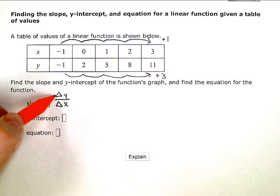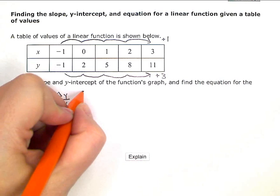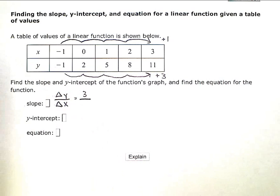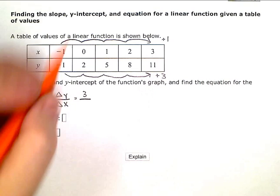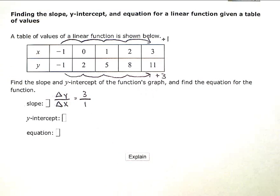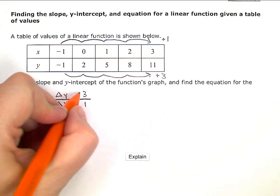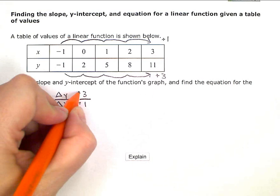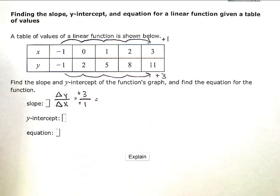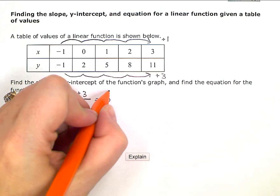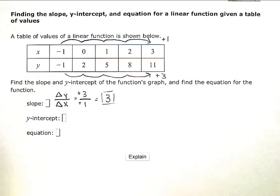So now we just need to put these in a fraction. So the change in y is plus 3, or positive 3. The change in x is changing by adding 1, or positive 1. So positive 3 divided by positive 1 is just 3. So my slope is 3.